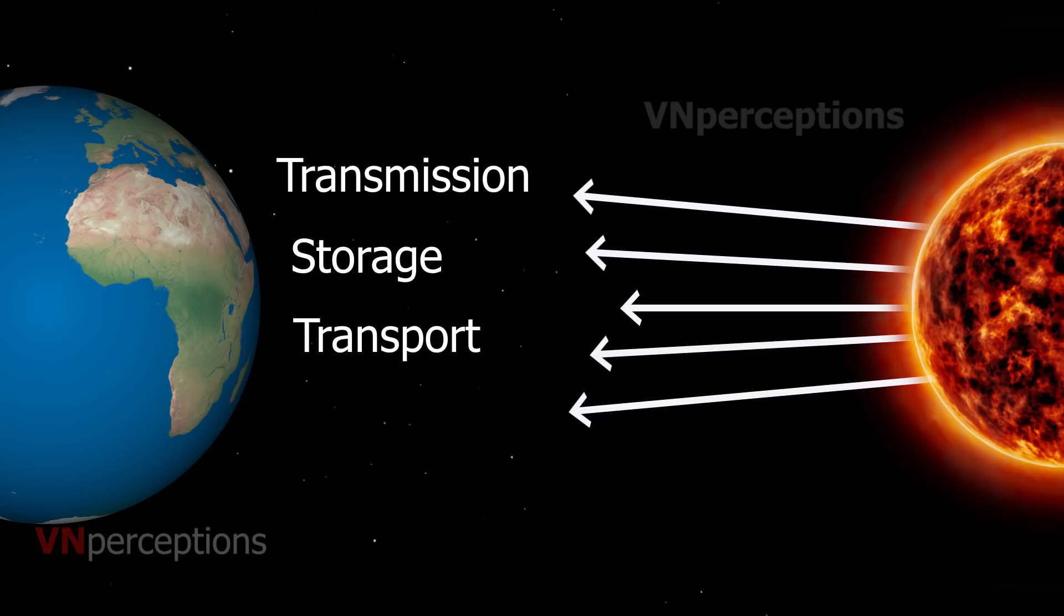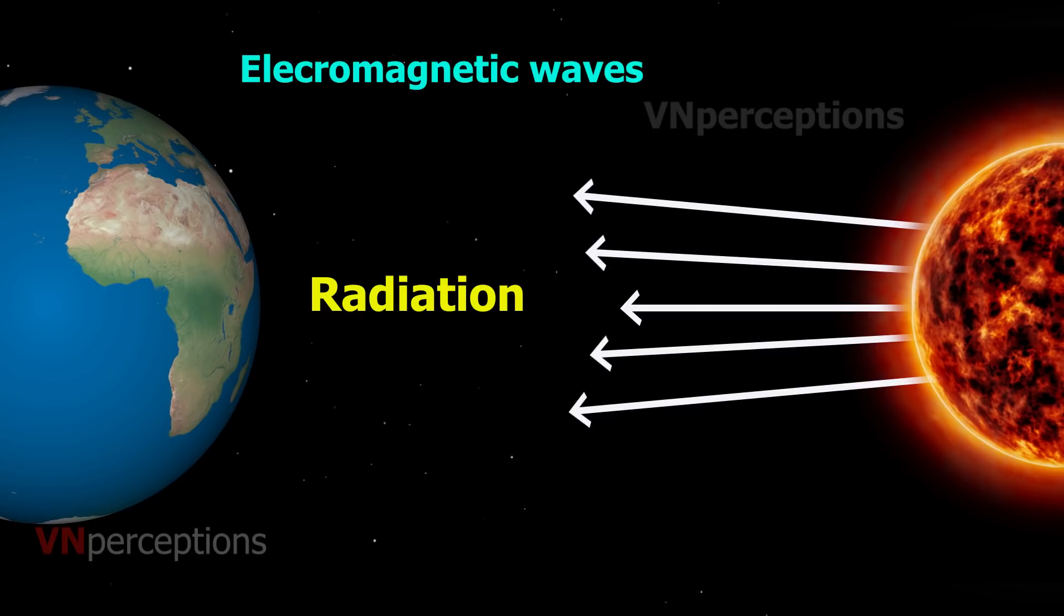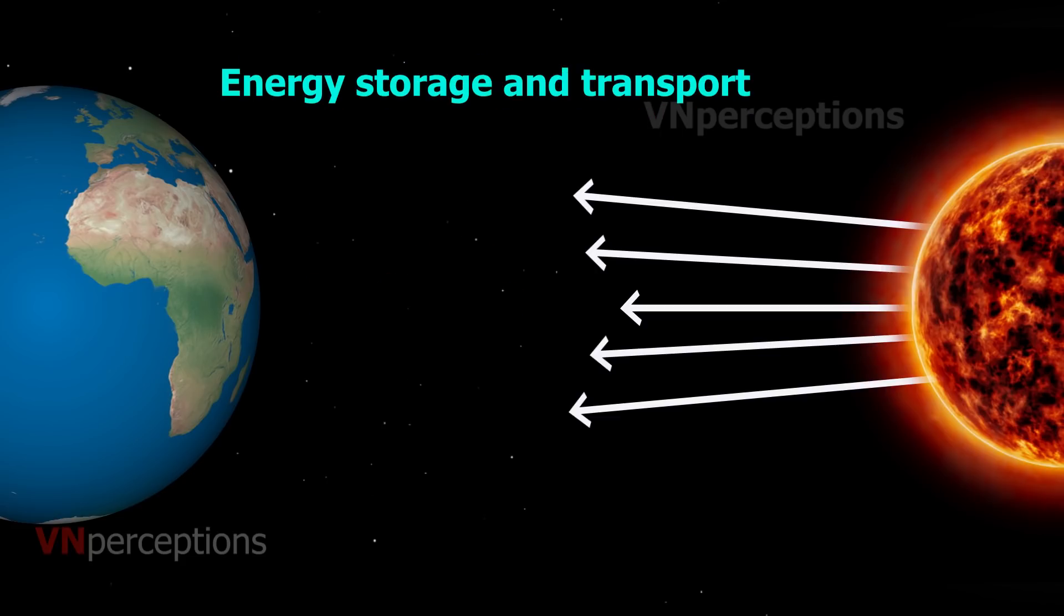Energy transmission means the sun is transmitting energy in the form of radiations. Radiation is the emission of energy in the form of electromagnetic waves or moving subatomic particles, whereas energy storage and transport occurs in the form of heat.